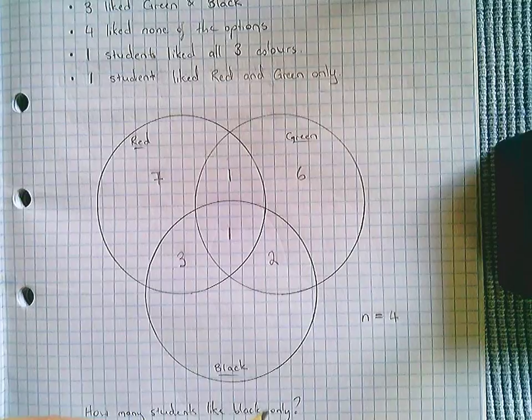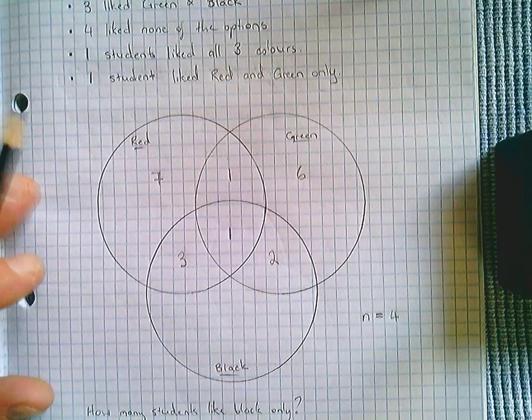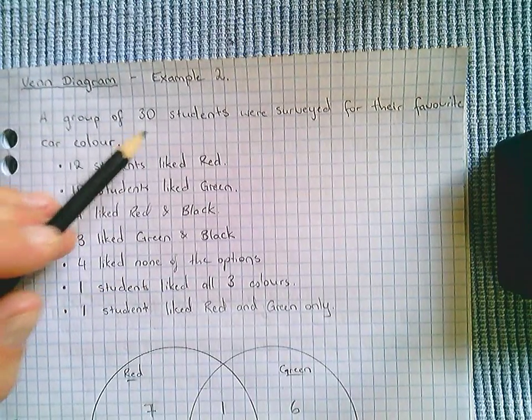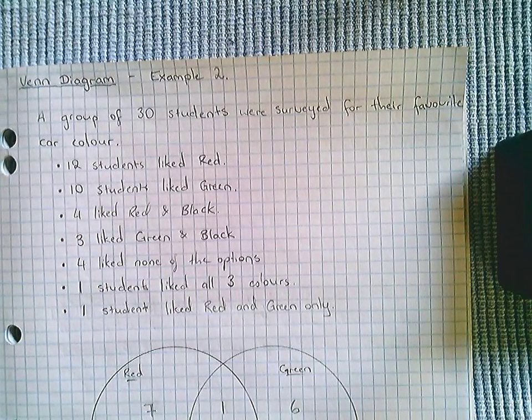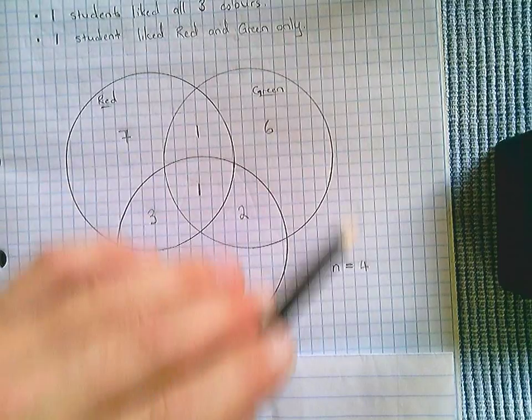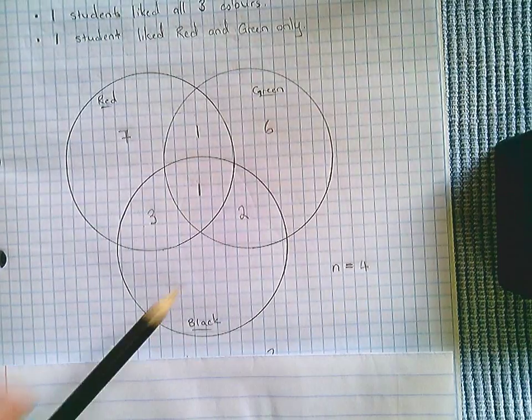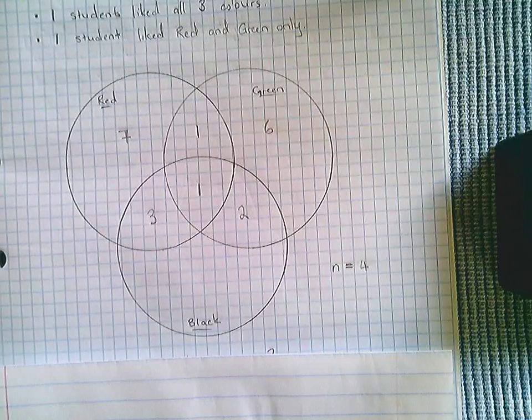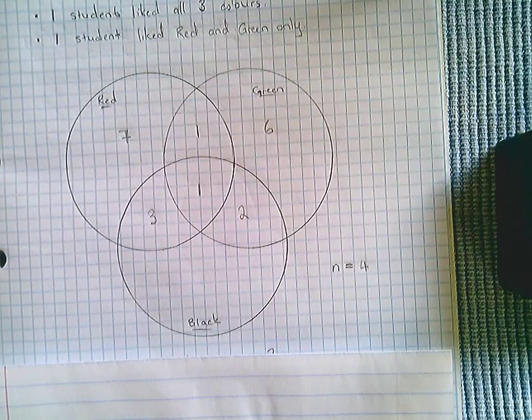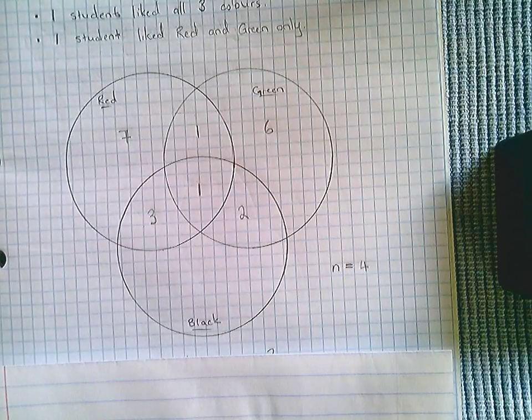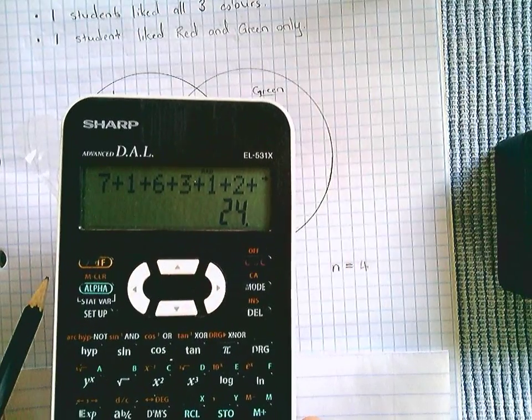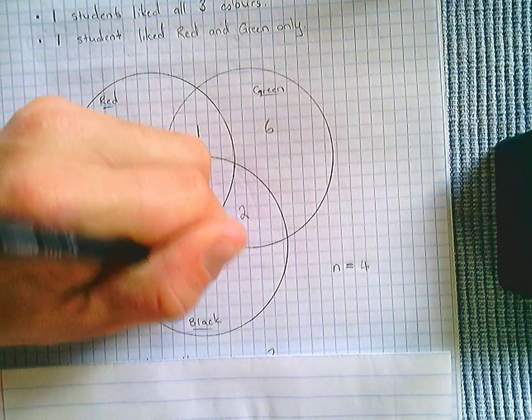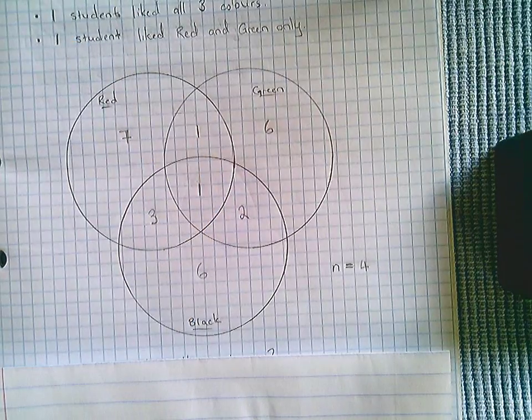Which means I'm left to find this value here. Like the last example, you might be thinking, oh no, I've run out of information, but we've got another critical bit up here. Thirty students interviewed or surveyed, meaning that everything added together, including the four, must add to thirty. So seven plus one plus six plus three plus one plus two plus four, can't forget him, equals twenty-four. The difference between twenty-four and thirty is going to be the students that like black only, which is six.